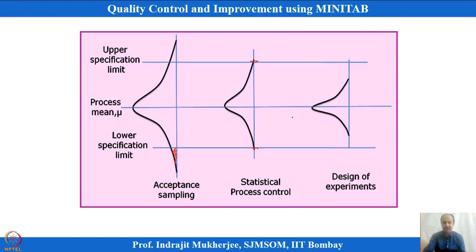Statistical process control is where CTQs are generated — we are talking about quality of conformance. Whenever a CTQ is generated, it needs to be monitored, and there are charts that can visualize the complete monitoring process. We want to understand how it is done in Minitab.